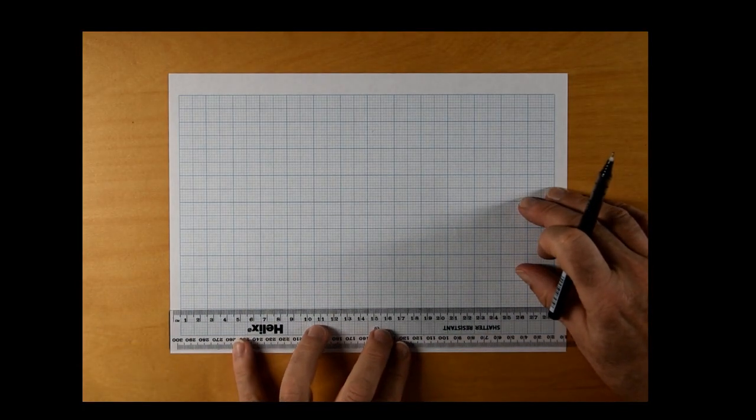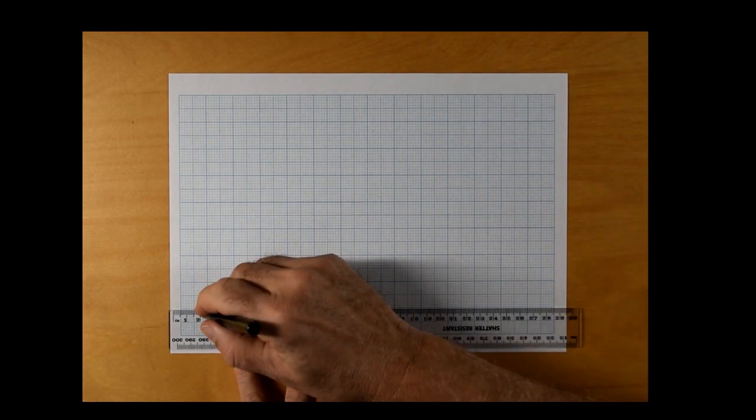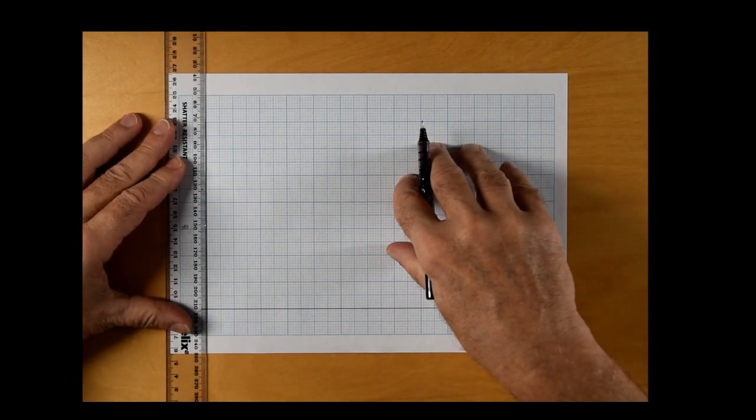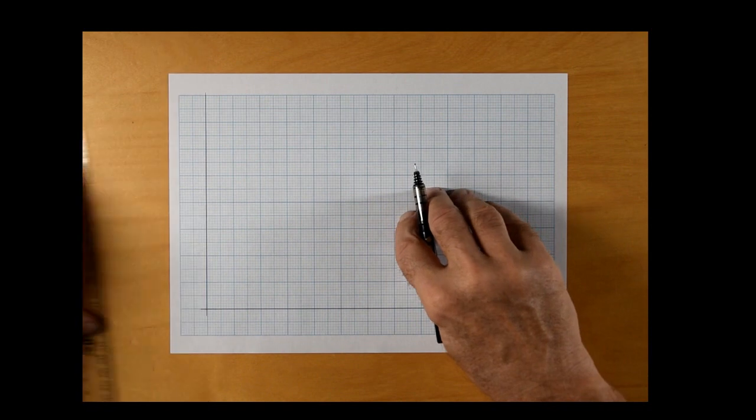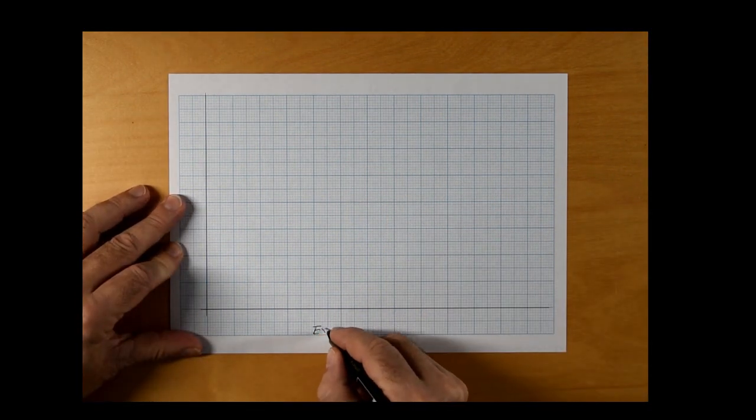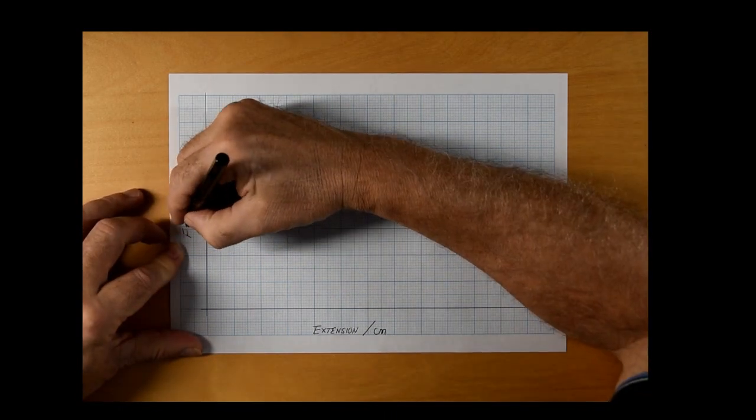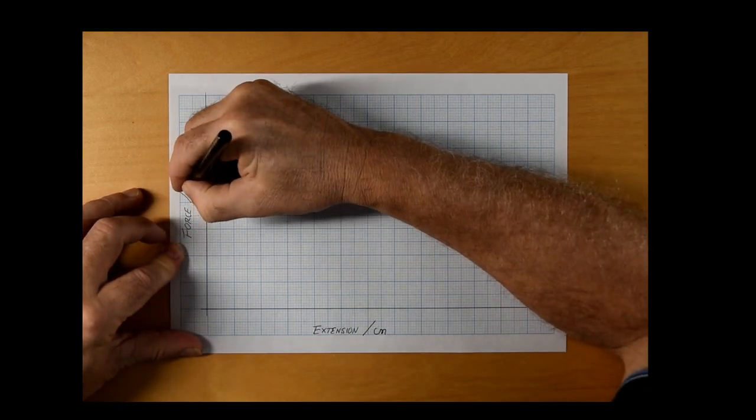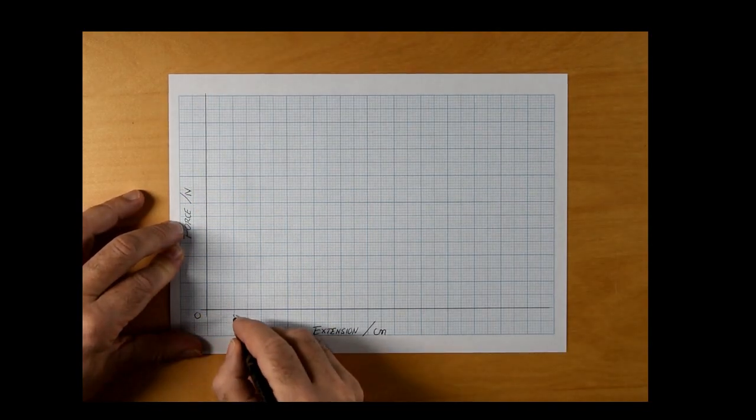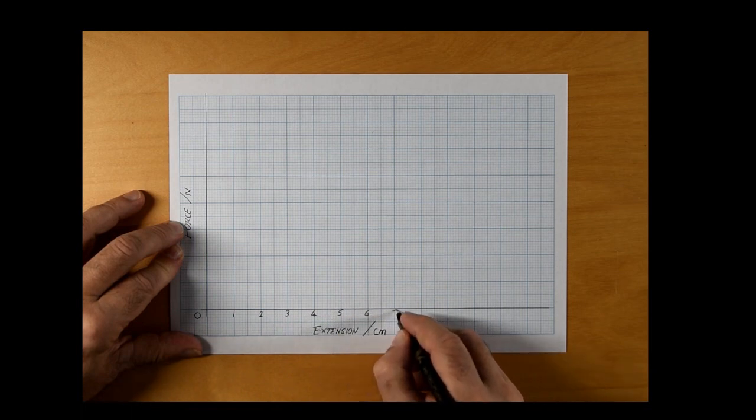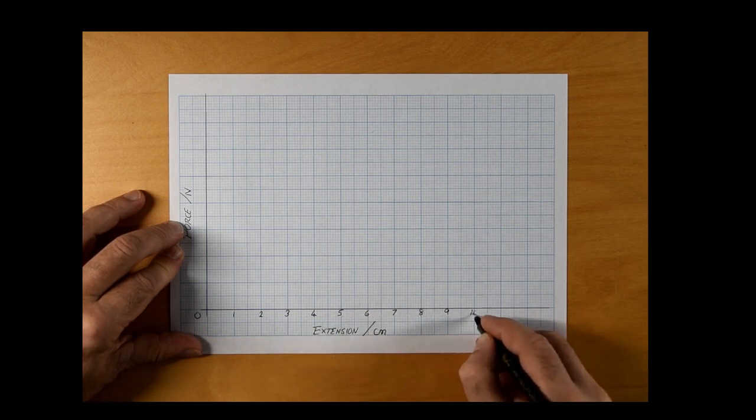And as always, here is the inevitable graph. For historical reasons, to do with the original testing machines, force is always plotted up the side and extension along the bottom. I know force was our independent variable, but the original machines were set up to see how much force was required to stretch by a fixed amount.